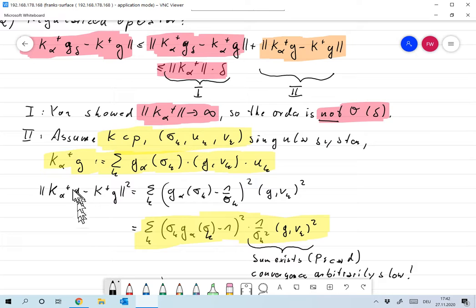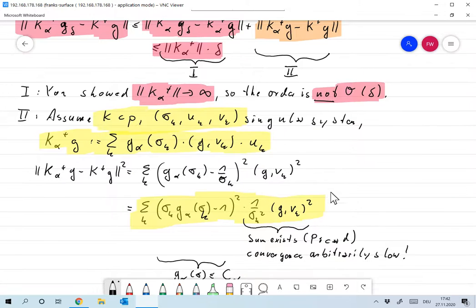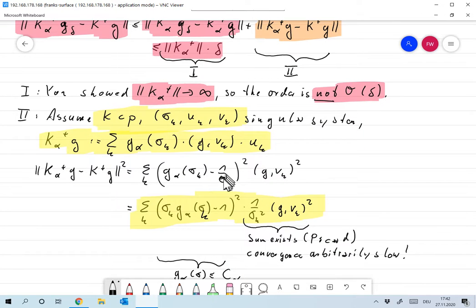Okay, then the second term over here, we've already computed that as well, is K alpha plus G minus K plus G, which is, plugging in the representation of K plus G and K alpha plus G, nothing but sum over all K, G alpha of sigma K minus one over sigma K squared times G and VK squared. Now, what we did is we took that one over sigma K over here out. So we get here something like one over sigma K squared, G and VK squared. And then this is the rest we have over here, sigma K times G alpha of sigma K minus one squared.